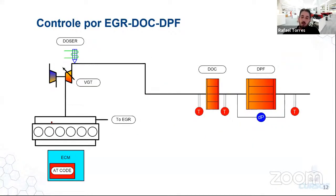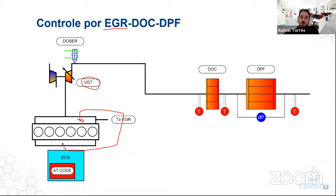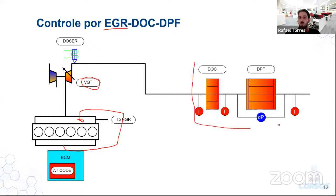Outras formas de reduzir a emissão incluem o controle com EGR, usando uma válvula para recircular o gás de escape na admissão — muitas tecnologias usam turbo de geometria variável (VGT) para modular a pressão de escape e direcionar o gás de volta na admissão. Isso reduz bastante o NOx diretamente na combustão pela remoção de oxigênio, e o material particulado é reduzido através de filtros.